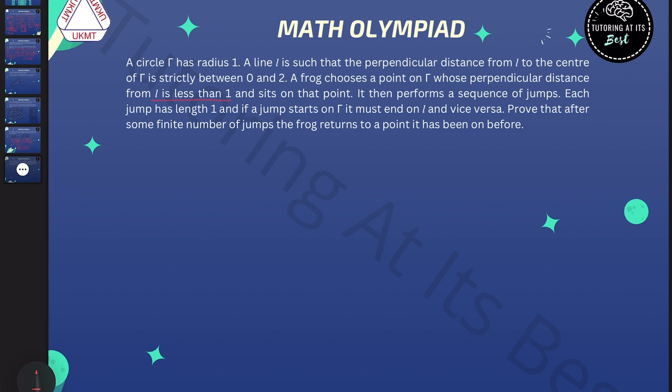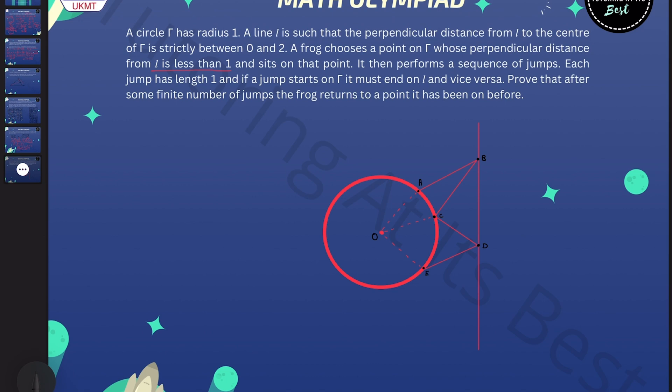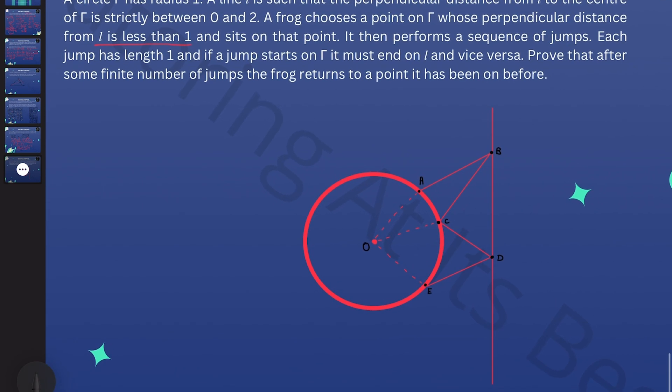This is a problem about a jumping frog. The frog is initially on a circle at a point of its choosing which is a distance of less than 1. Let's present this in a diagram. The distance is less than 1 on this vertical line and the radius of the circle is also 1.